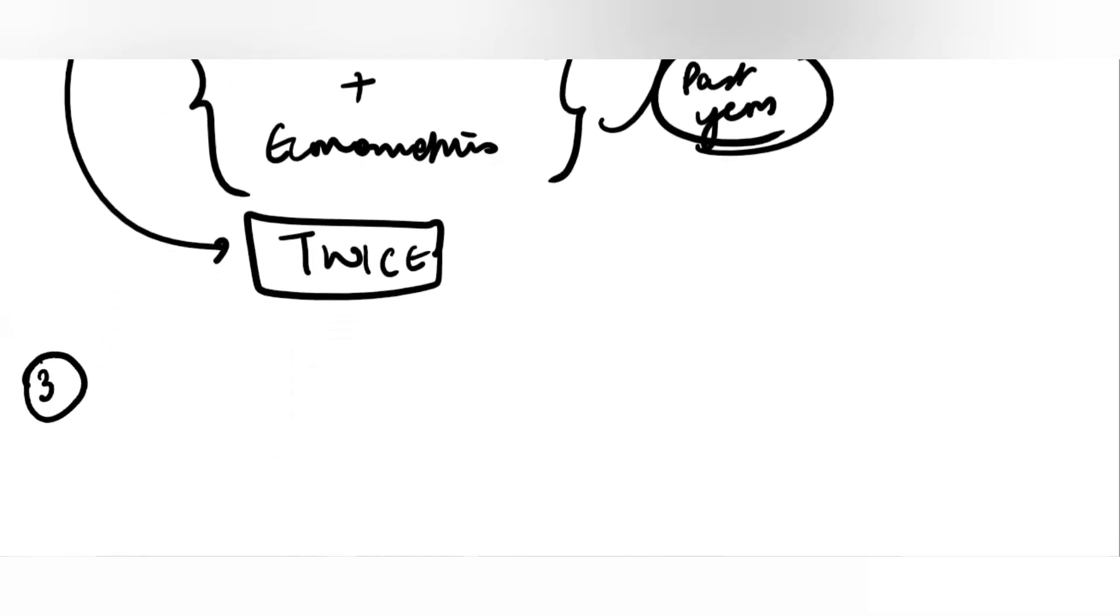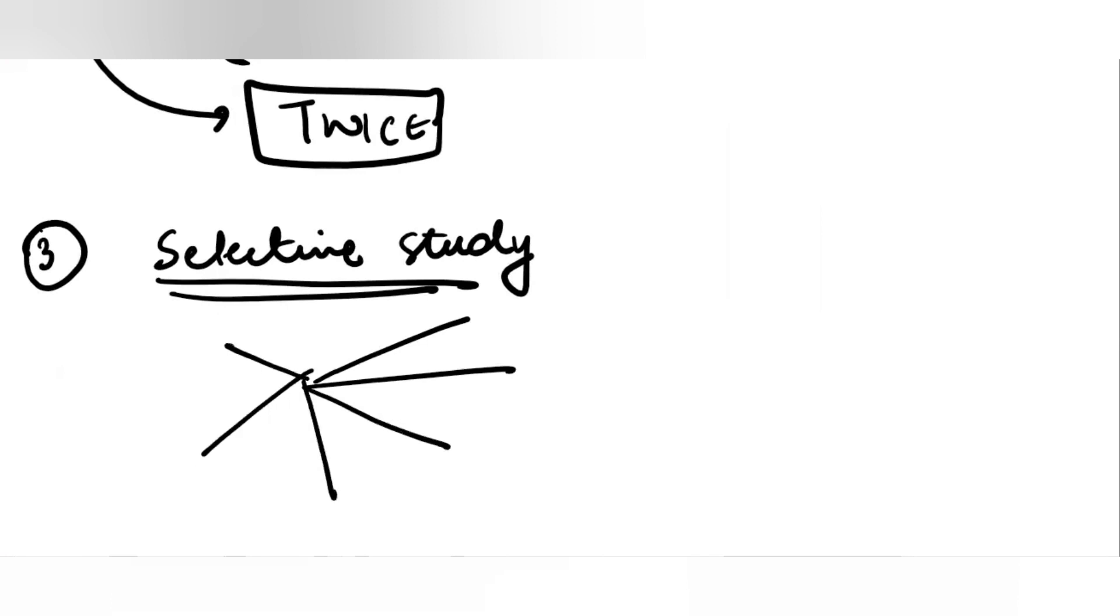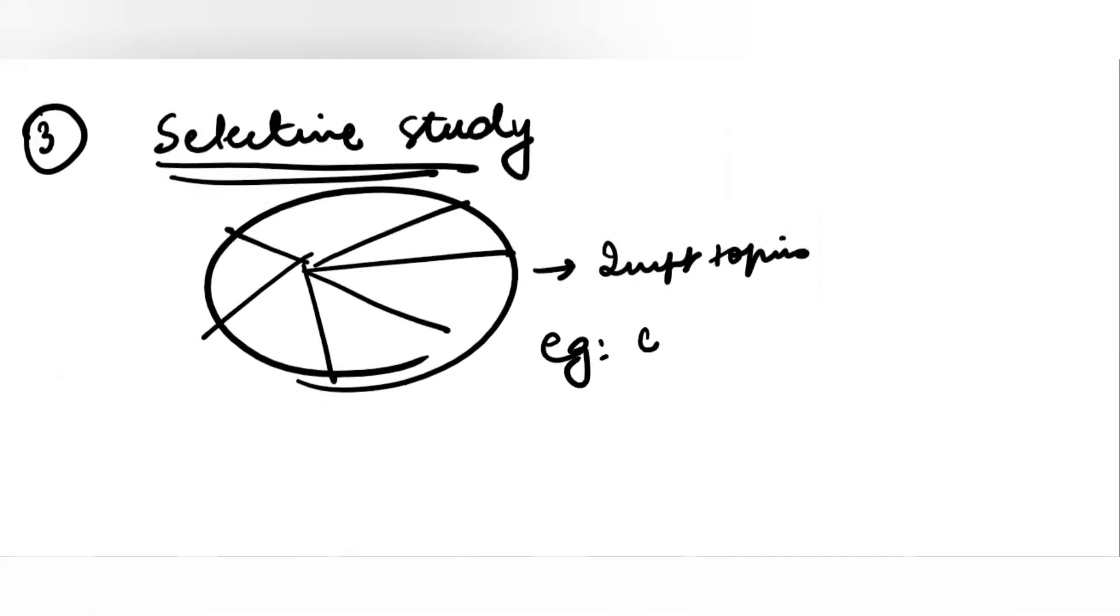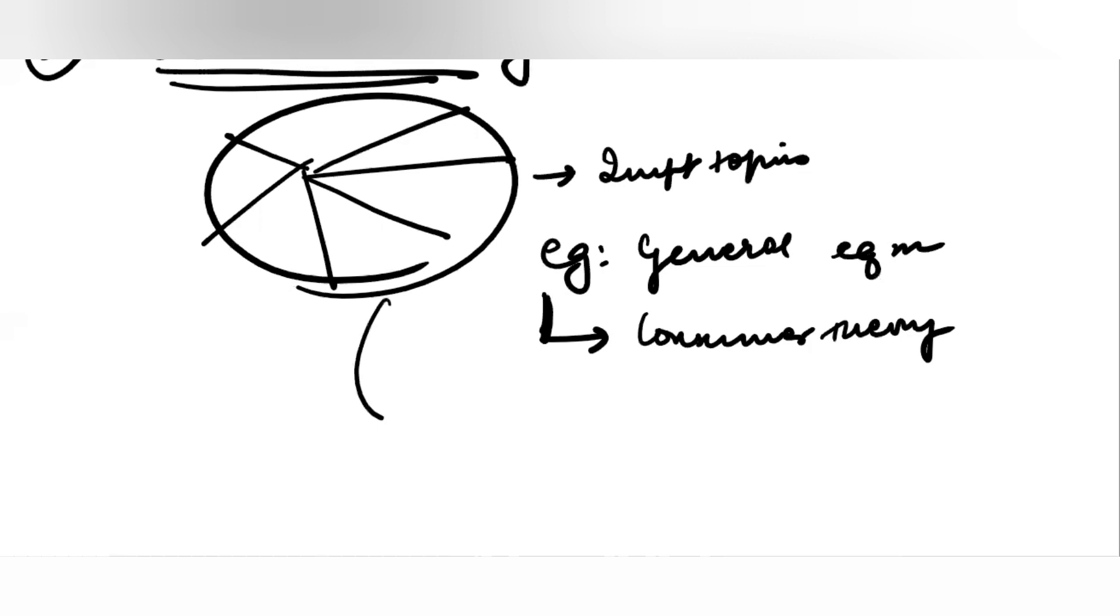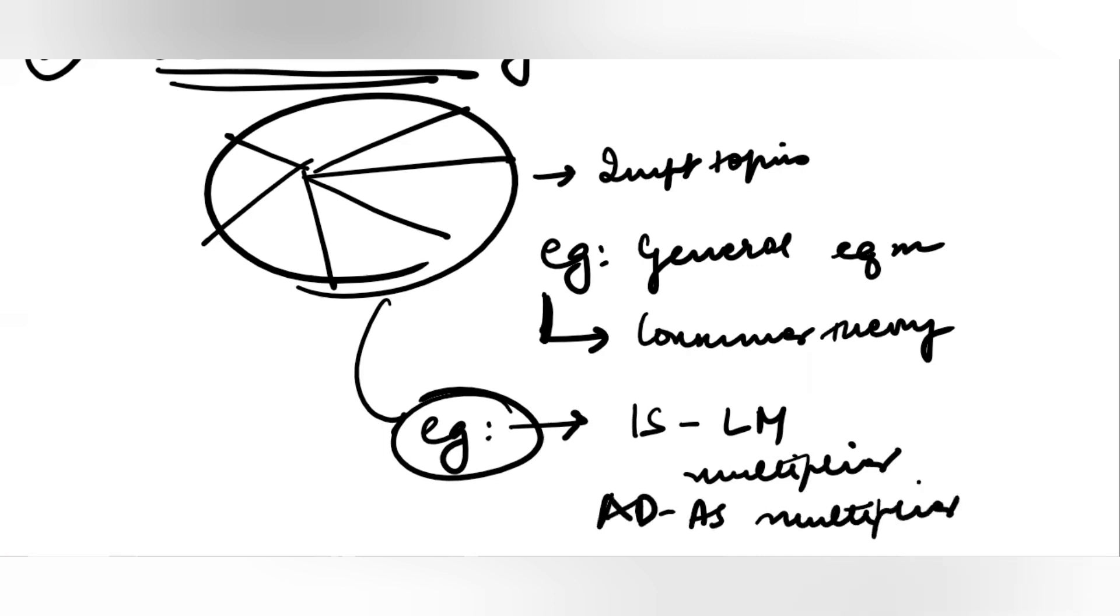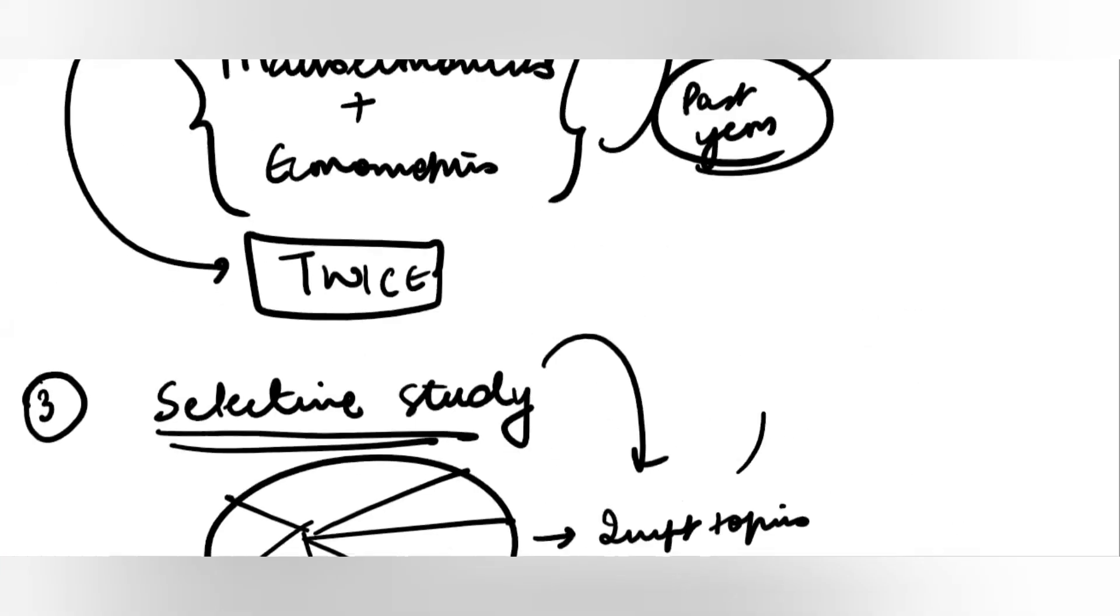Third, you have to do selective study. You cannot pick up on everything now. No time for that. You have to understand which are the important topics. For example, in microeconomics, we know for sure general equilibrium is important. We know for sure that there is a short question which can be asked related to consumer theory. For example, we know that in macroeconomics, you can definitely get a short question asking you something related to ISLM multiplier or ADAS multiplier. So, what do you know? And how do you know this pattern? Through what has come in the past years.